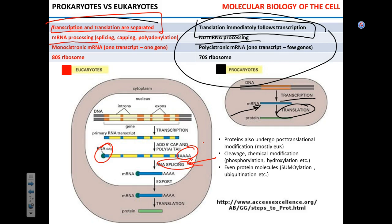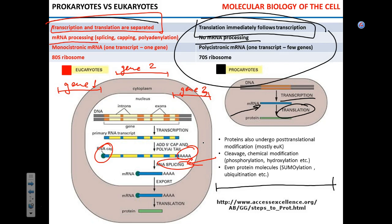Ribosomes are different: 70S in prokaryotes and 80S in eukaryotes. Also interesting is that mRNA in eukaryotes is monocistronic — meaning if you have three different genes, each gene is going to be transcribed into its own separate RNA. In prokaryotes, several genes can be transcribed into one big mRNA, and prokaryotic mRNA is called polycistronic.